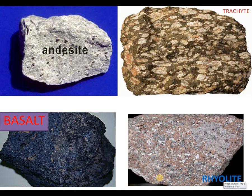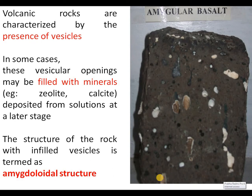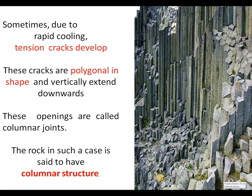Andesite, trachyte, rhyolite, and basalt are shown. In basalt, we can sometimes notice vesicles; if present, they are characterized by secondary minerals such as zeolite and calcite, and in such a case the basalt is said to exhibit amygdaloidal structure. Columnar joints can also be seen in basalts due to rapid cooling — tension cracks develop that are polygonal in shape and vertically extended downwards, giving the rock a columnar structure.